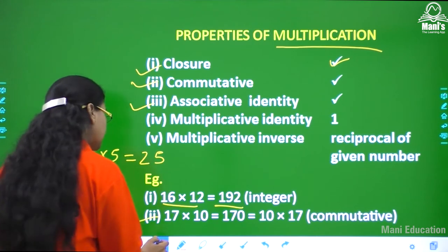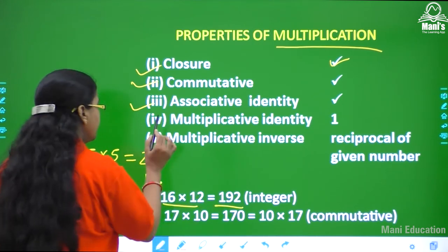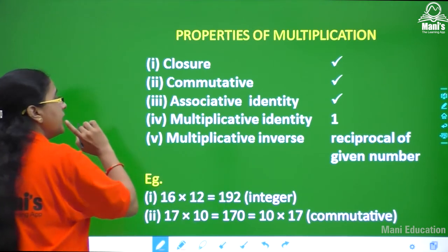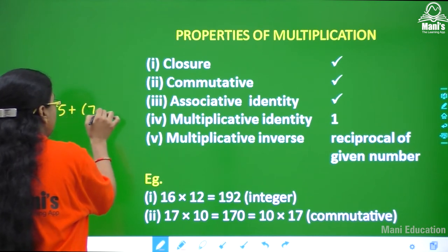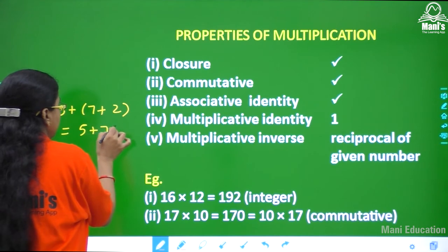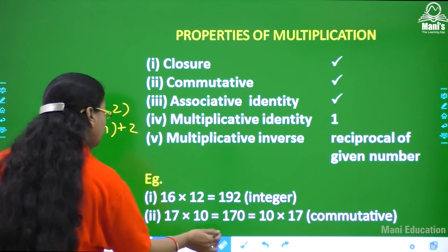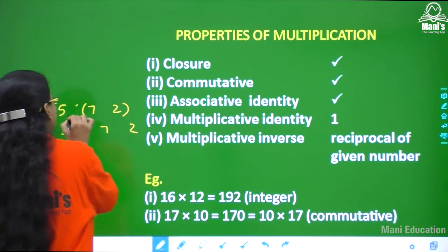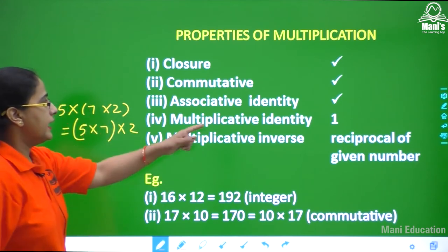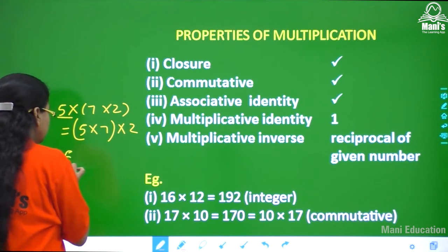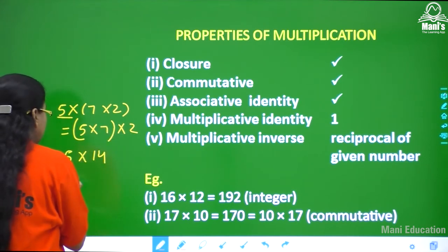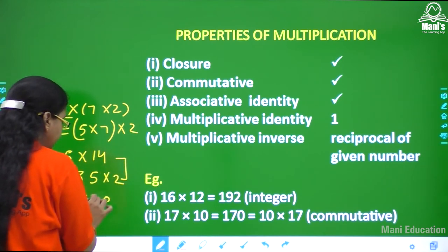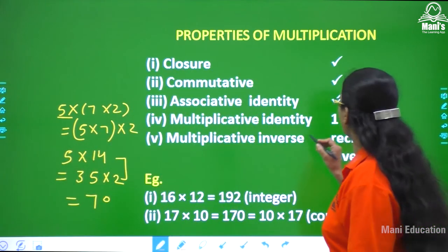Next is the associative property for multiplication. With three numbers: 5 times 7 into 2 — first solve 7 into 2 equals 14, then 5 into 14 equals 70. Or first 5 into 7 equals 35, then 35 into 2 also equals 70. In both cases the answer is 70, so associative property is followed for multiplication.